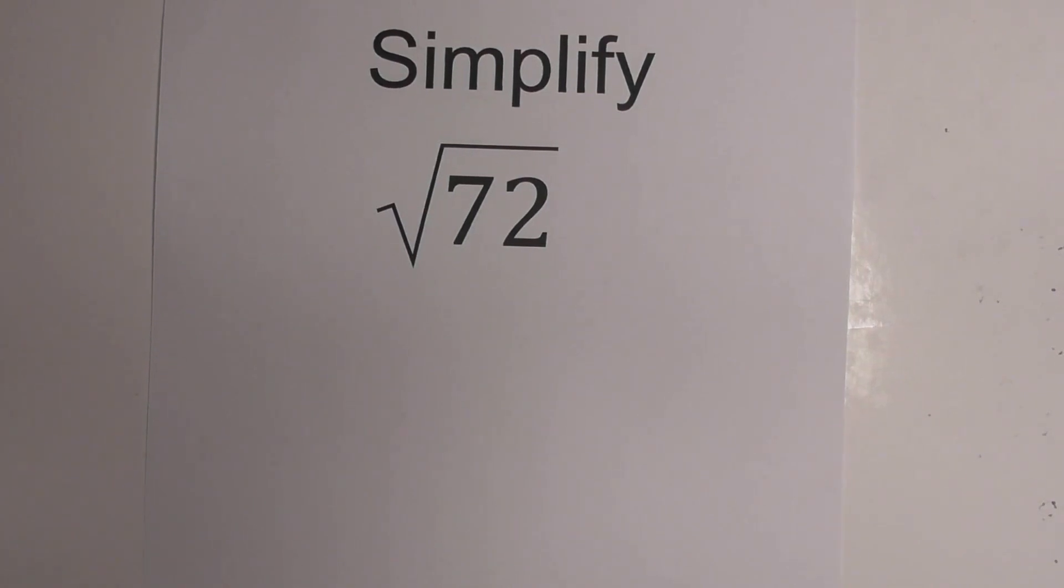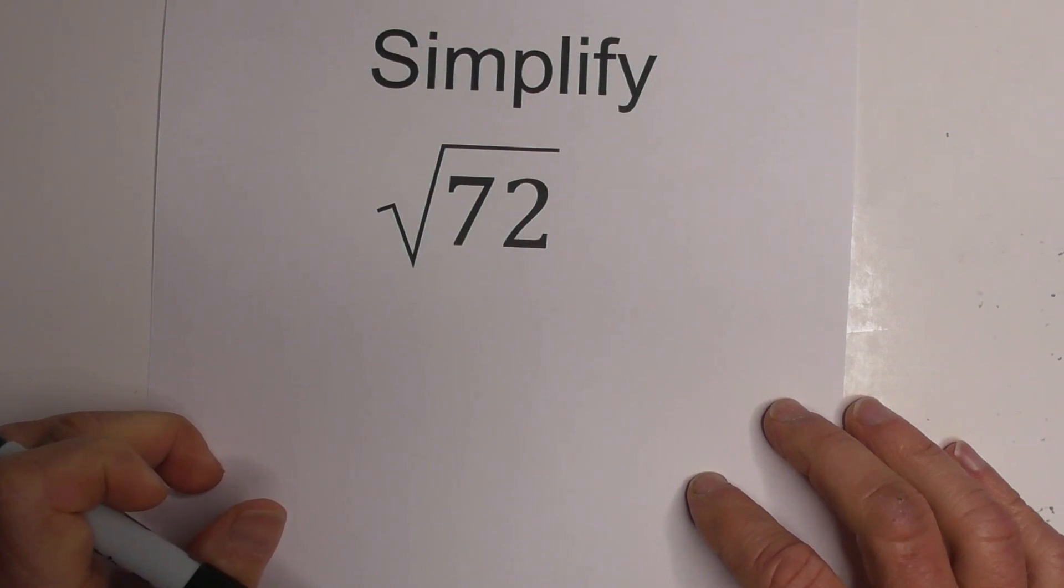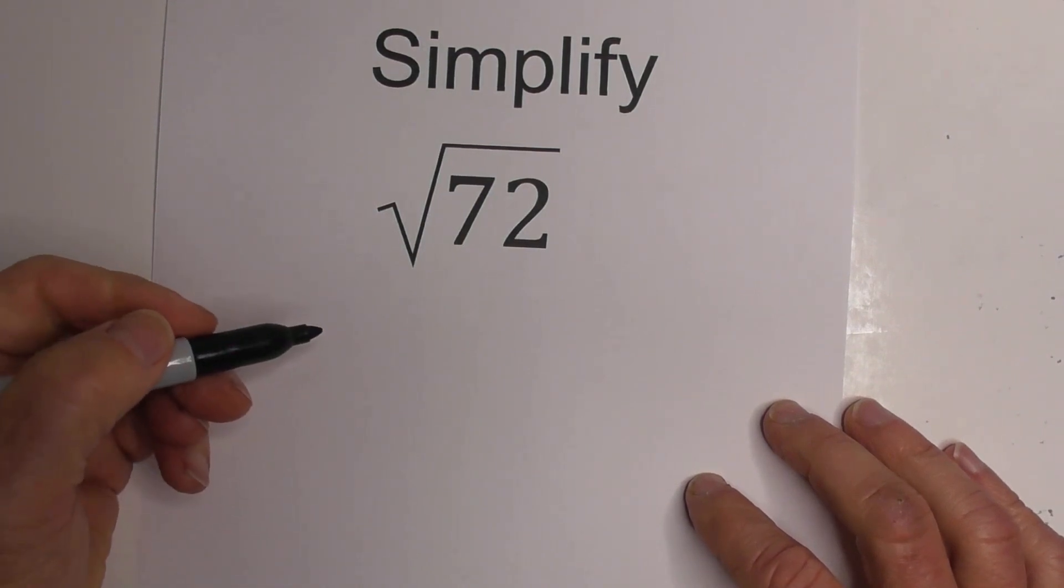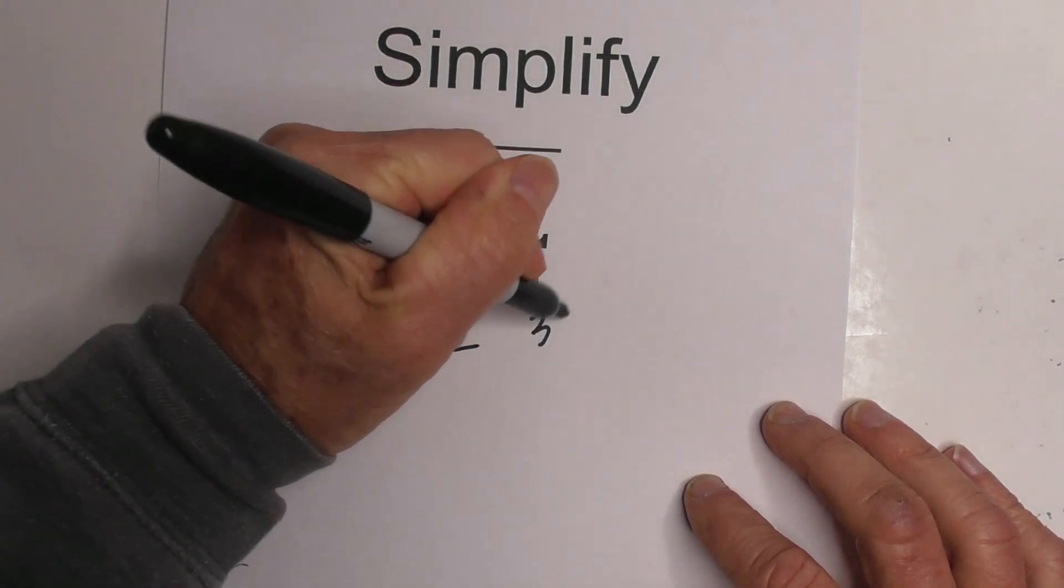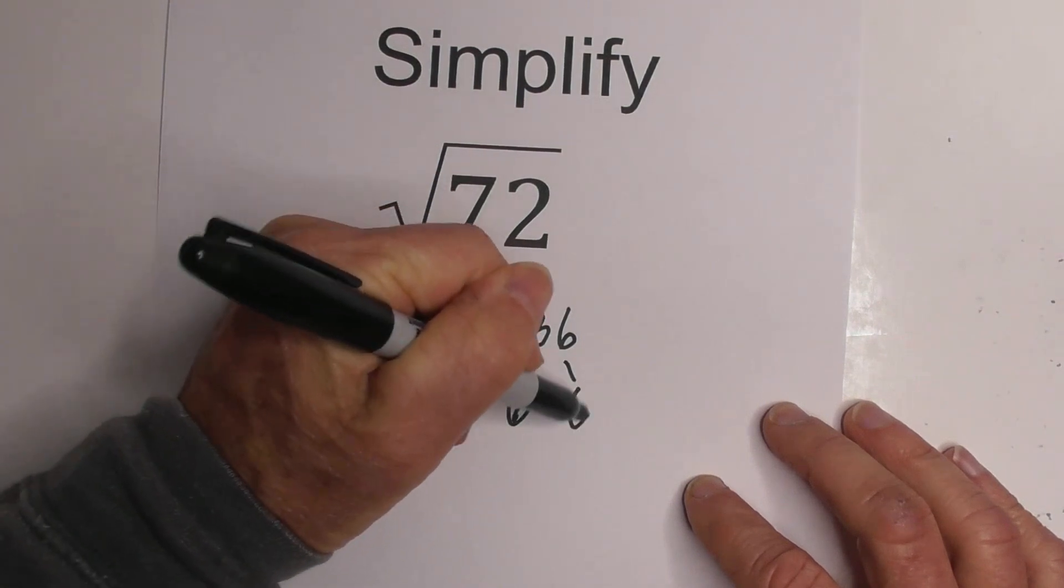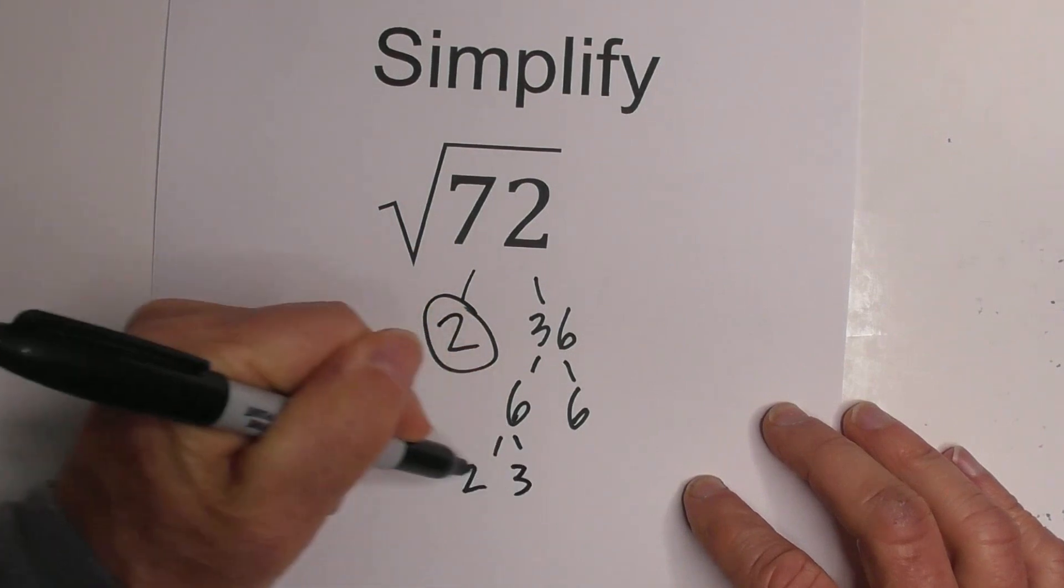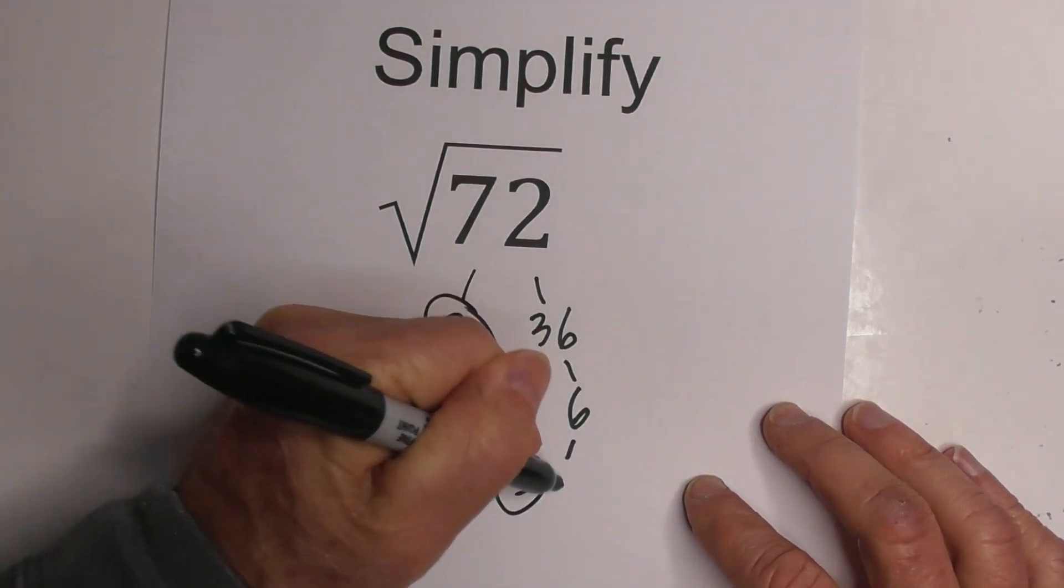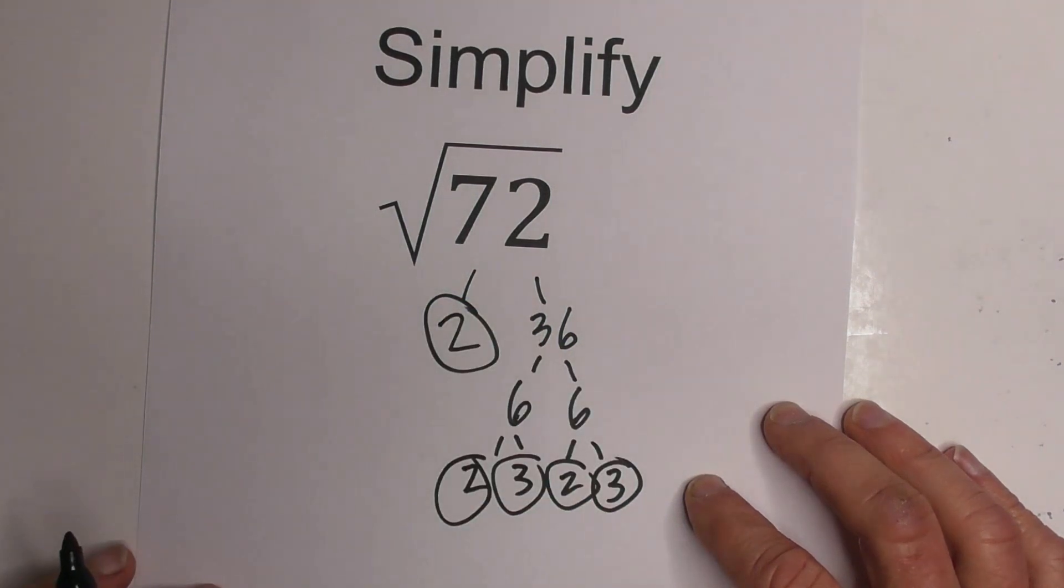How do you simplify the square root of 72? Well, I like to use a factor tree, so let's get started. I know 2 times 36 is 72. I'll circle the 2 because it's prime, and then 6 times 6, and then 2 times 3 equals 6 and 2 times 3 equals 6.